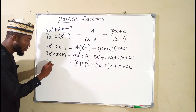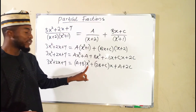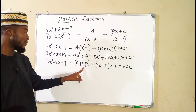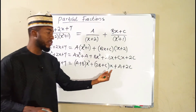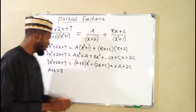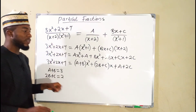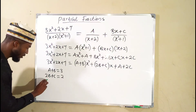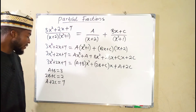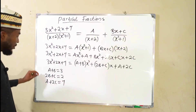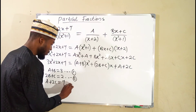To the left we have 3x squared plus 2x plus 7. Therefore we are going to relate their coefficients. The coefficient of x squared gives us a plus b equals 3. The coefficient of x gives us 2b plus c equals 2. And the constant term gives us a plus 2c equals 7. These are the three equations we obtain by breaking this fraction down, and we are going to solve them simultaneously.